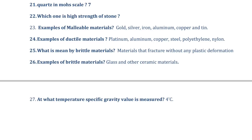At what temperature is the specific gravity value measured or calculated? That is at 4 degrees Celsius. Under 4 degrees Celsius, the specific gravity value is calculated. Specific gravity is the ratio of the density of solids to the density of water.